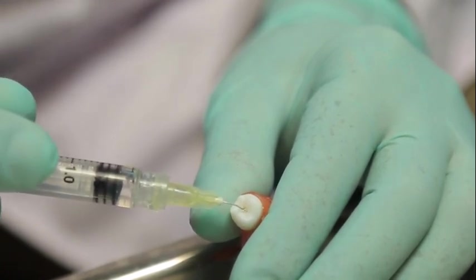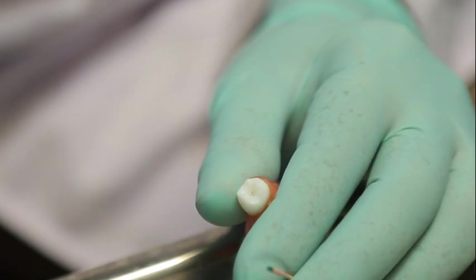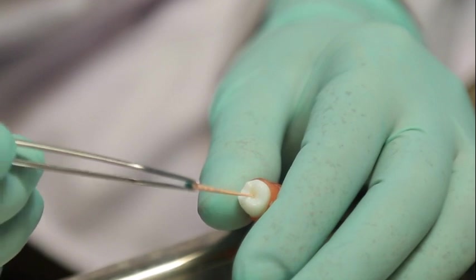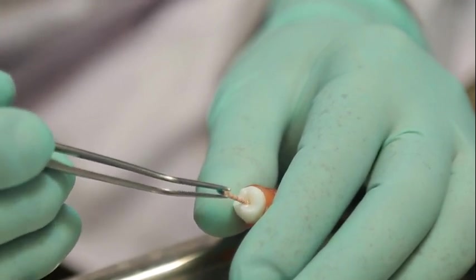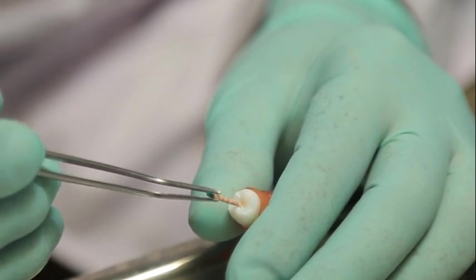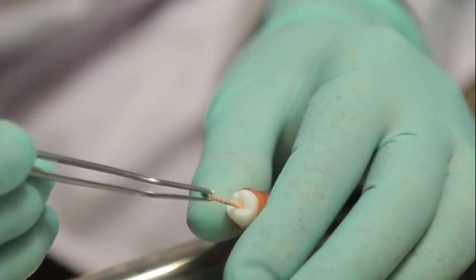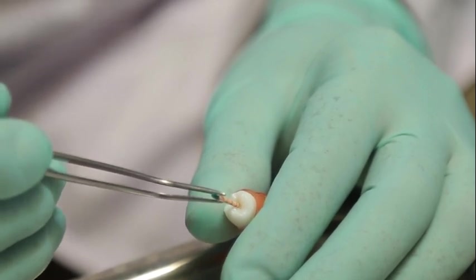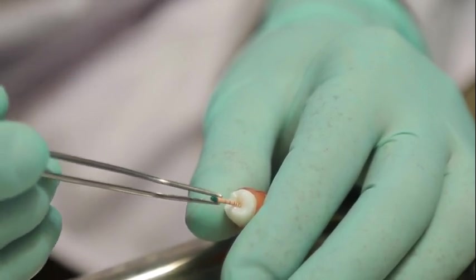Do not wedge the needle inside the canal. Then you can use the master cone at 1mm short of the working length to agitate the EDTA solution. This is called manual dynamic agitation.